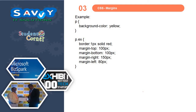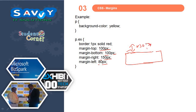The example defines margin top as 100px, margin bottom as 100px, margin right as 150px, margin left as 80px. So this is the gap we are giving — let us say this is the border: the top margin is 100px, bottom is 100px, margin right is 150px, margin left is 80px. These are the gaps we are giving. Thank you.